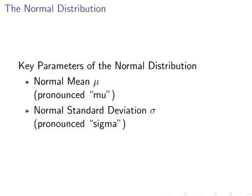Importantly, we have to remember that the two key parameters of the normal distribution are as follows: the mean, or the normal mean for the sake of clarity, which is denoted by the Greek letter mu, and also the normal standard deviation sigma. Again, I add in the word normal to the standard deviation just for the sake of clarity.